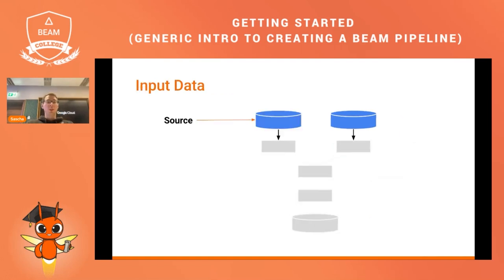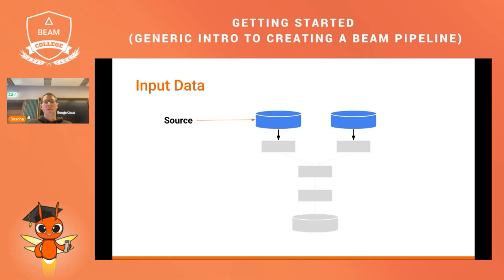When it comes to reading data, we are talking about sources. In Beam pipelines, sources are used to read data from external data sources such as files, databases, or streaming services. There are a number of built-in data sources, but you can also define your own data sources in a pipeline.